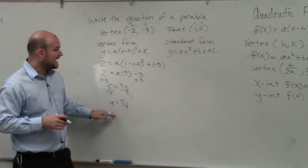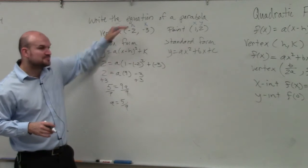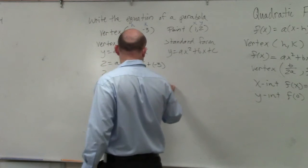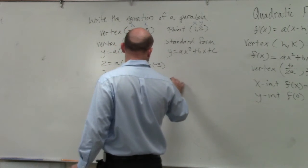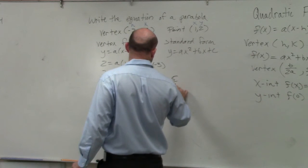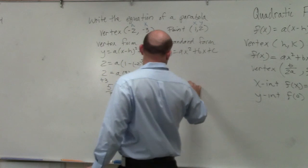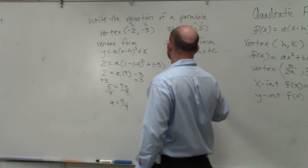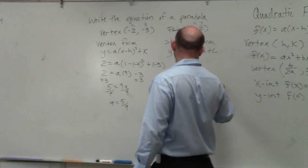So now a equals 5 ninths. I can plug in the rest of the information. So y equals 5 ninths times x plus 2 squared minus 3.